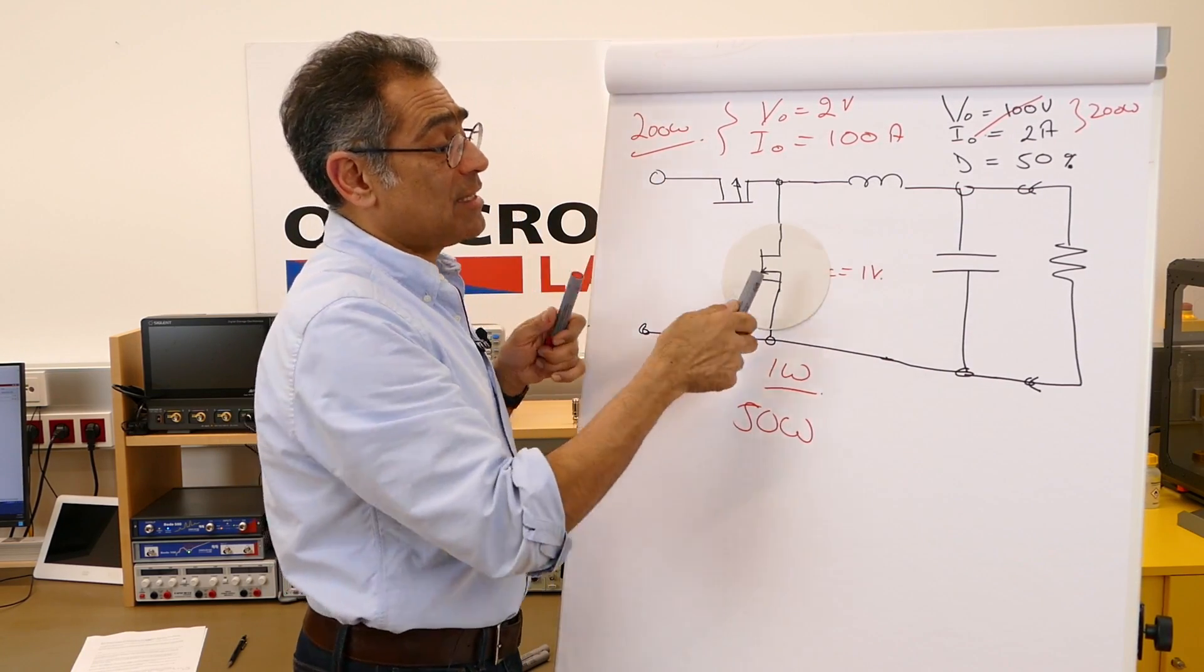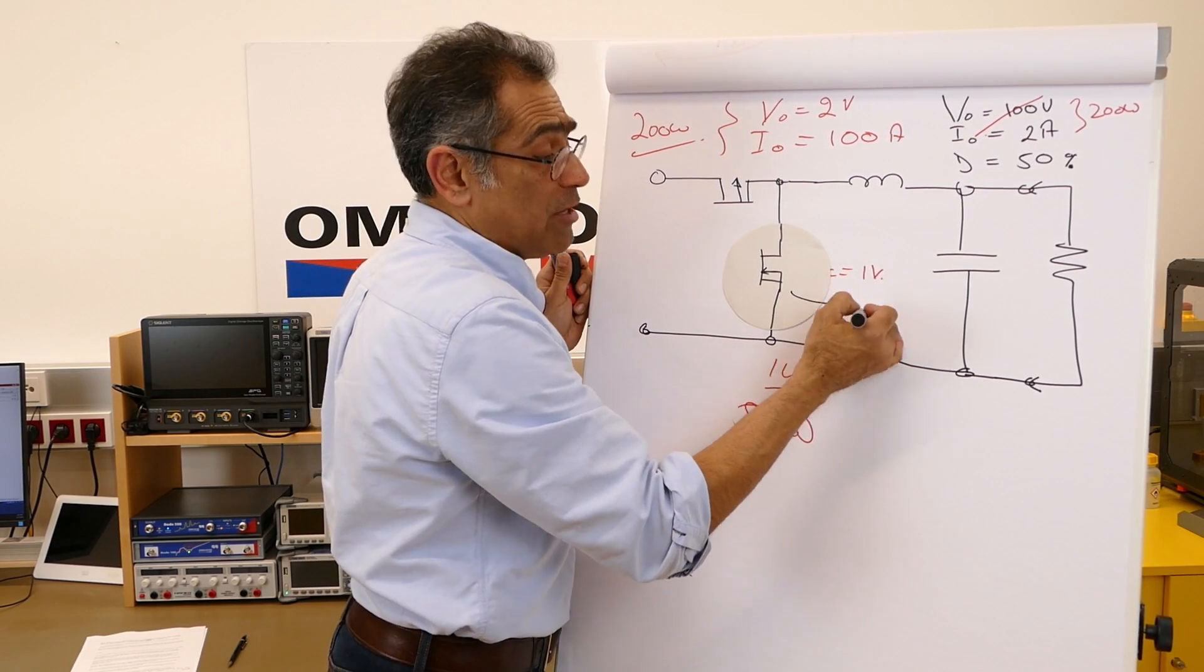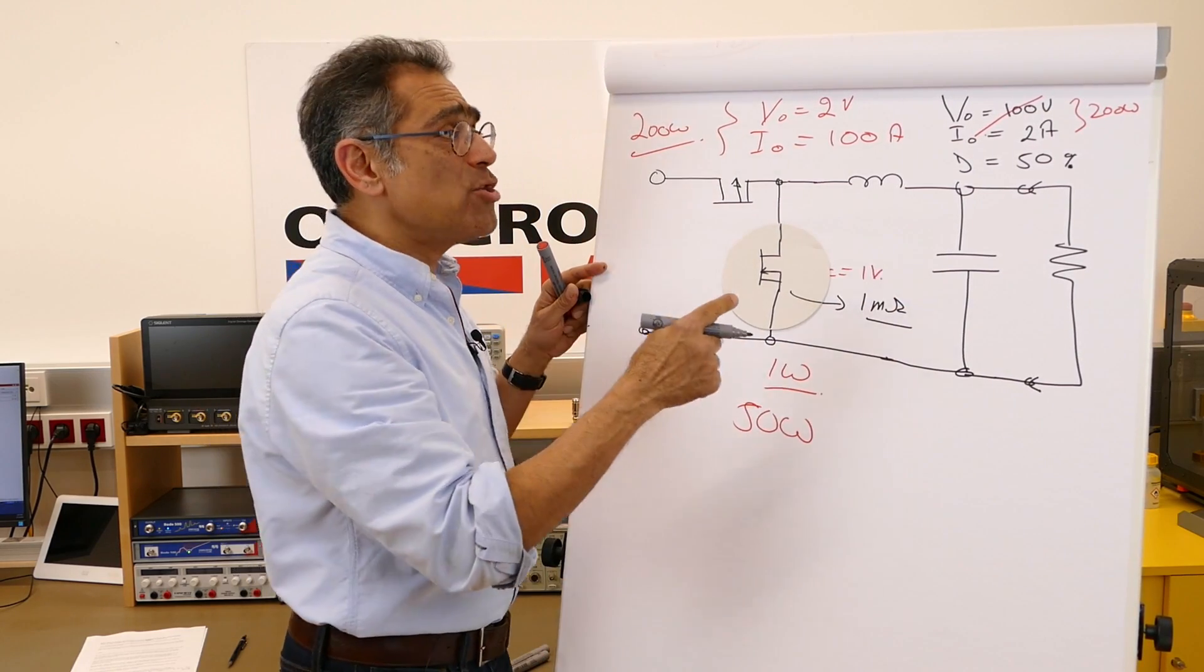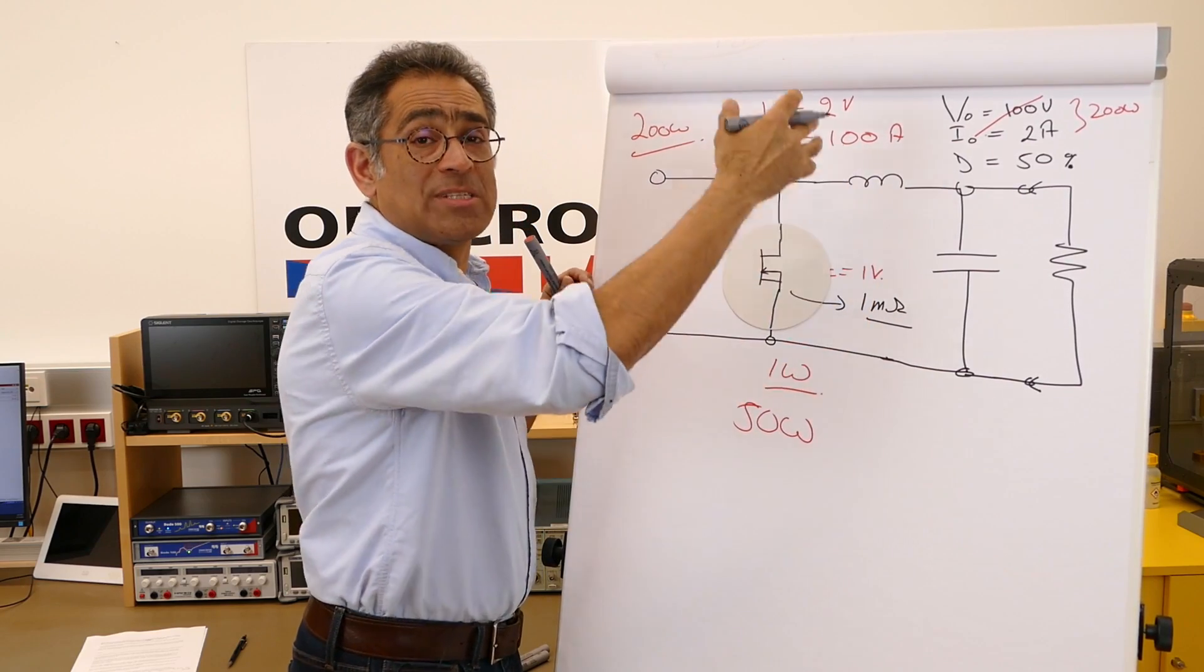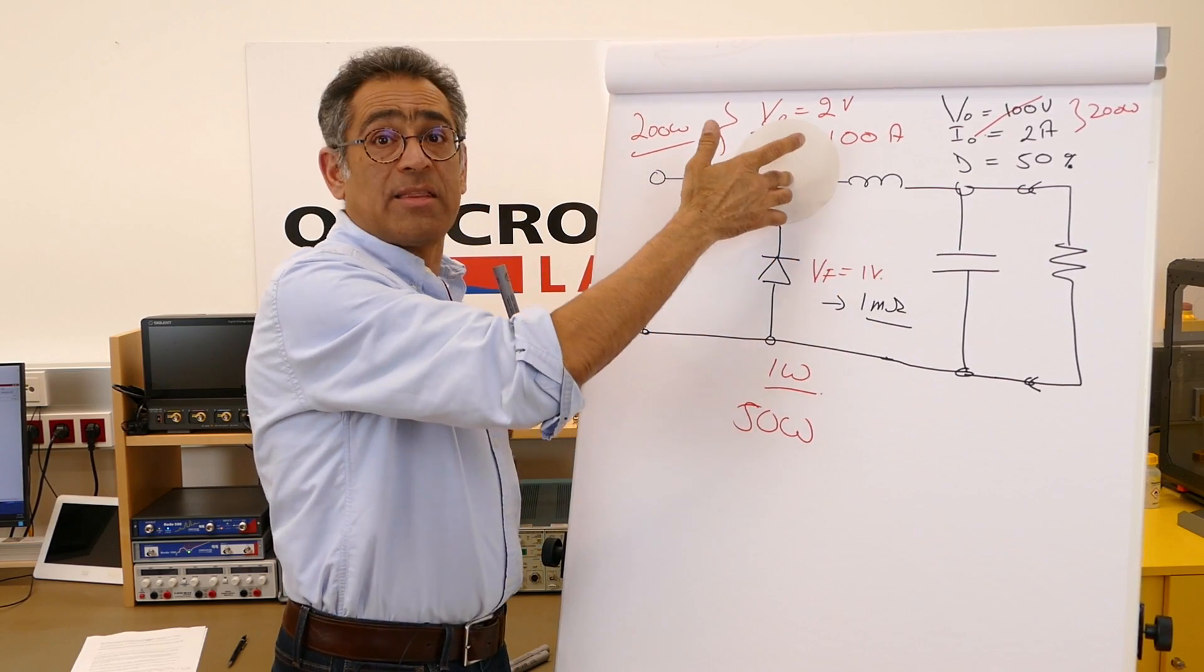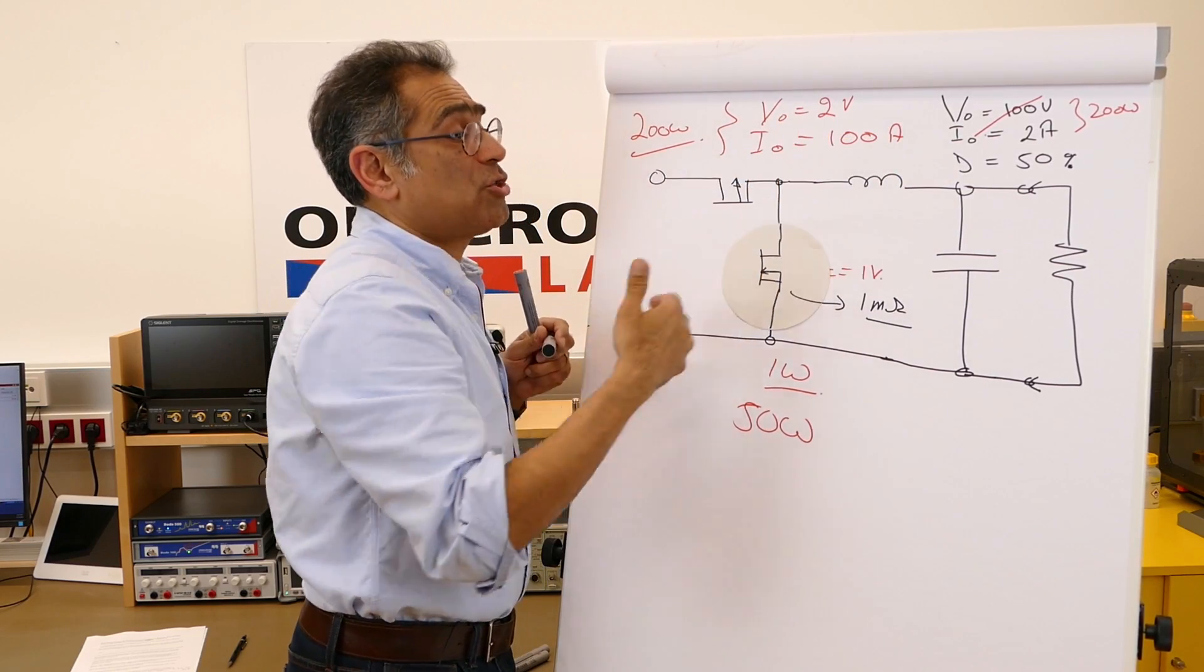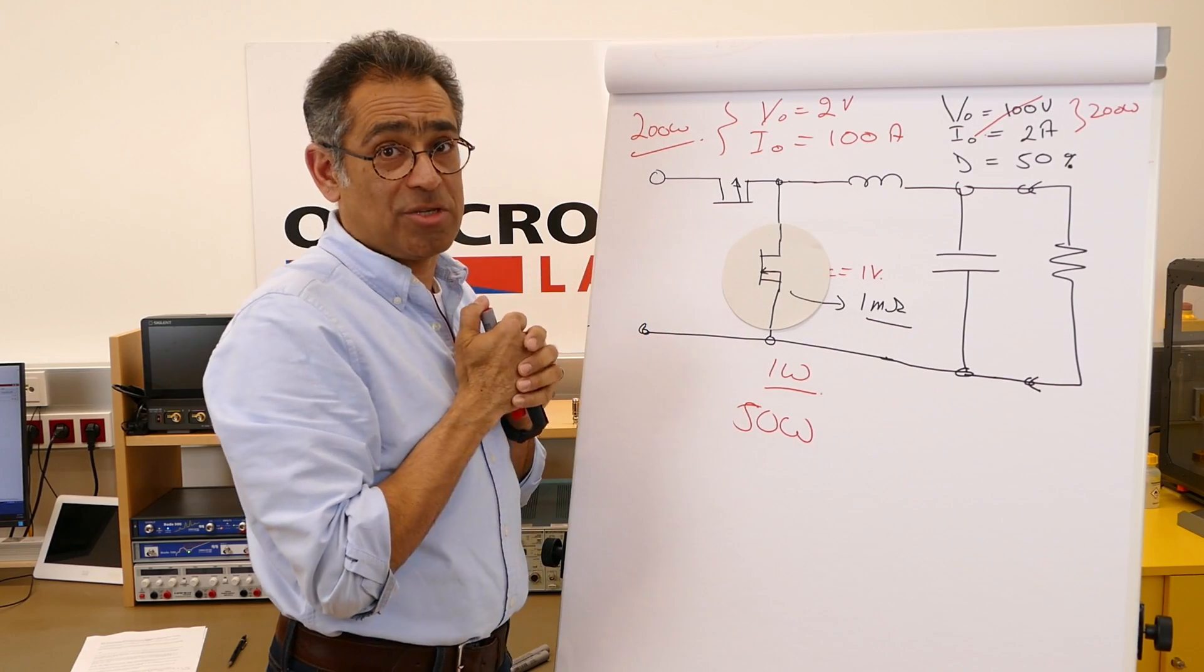Now if you consider that we can make the RDS of this really really small, let's say 1 milli-ohm for simplicity, now you have 100 amps squared times 1 milli-ohm taking into account the duty and the losses in this lower switch is going to be significantly smaller than this diode. So that's all well and good for applications whereby our output current is very very high we can do synchronous switching.